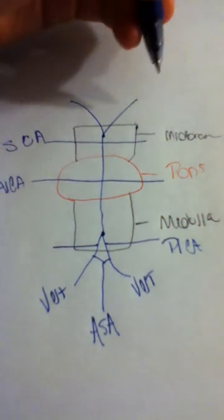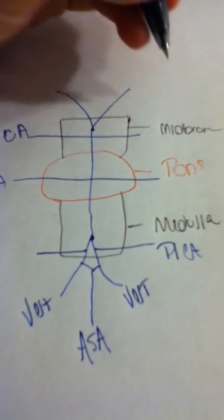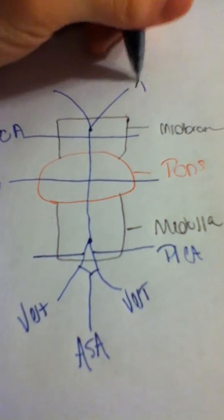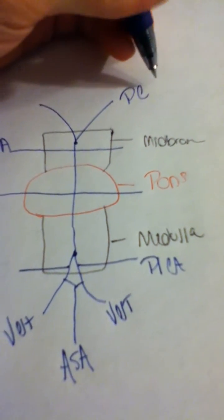And then finally at the top, they're going to branch off and be the posterior cerebral arteries.